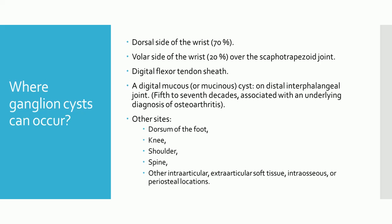Ganglion cysts can occur anywhere in the body and can also be found over the dorsum of the foot, and may, less often, arise in the knee, shoulder, spine, or other intra-articular, extra-articular soft tissue, intra-osseous, or periosteal locations.